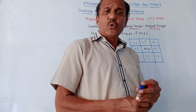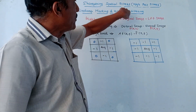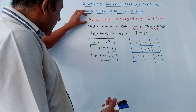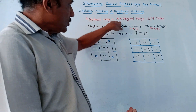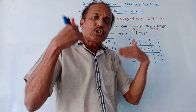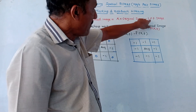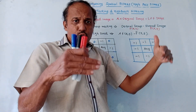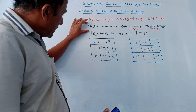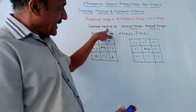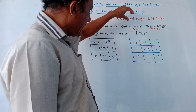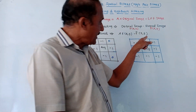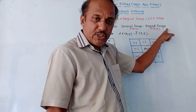Another variation of high pass filtering is unsharp masking and high boost filtering. High boost filtering is given by: high boost = A × f(x,y) − low-pass filtered version of the image, where A is a constant adjusted as needed. Unsharp masking gives a mask image by subtracting the blurred version f̄(x,y) from the original image f(x,y).